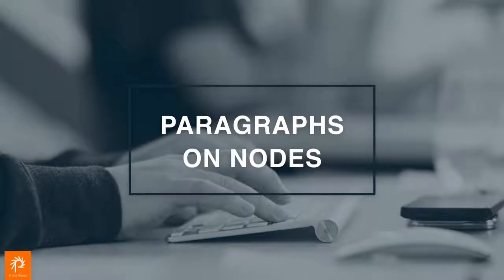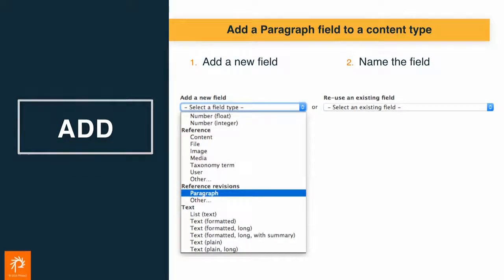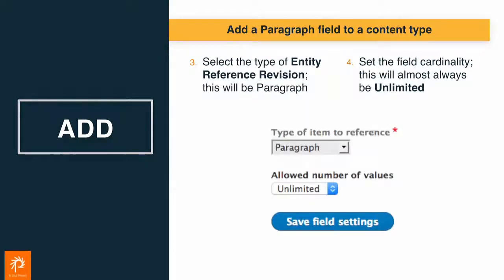Now that we have a type, we want to add that to our content. Similar to adding any field, we go and add a field and we select the paragraph type. What this is in the background is an entity reference - specifically an entity reference revision, which is a contrib module that paragraphs requires. This allows the paragraph to be moderated or translated with the parent node, as opposed to the core entity reference field, which would get out of whack as you had different translations or different revisions.